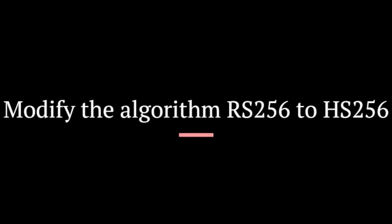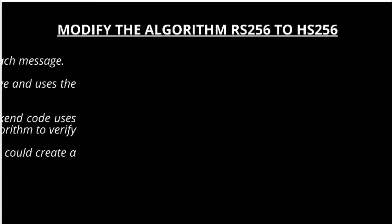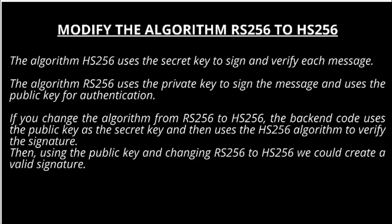Modify the algorithm from RS-256 to HS-256. The HS-256 algorithm uses the secret key to sign and verify each message, whereas RS-256 uses the private key to sign the message and the public key for authentication. If you change the algorithm from RS-256 to HS-256, the backend code uses the public key as the secret key and then uses HS-256 to verify the signature. Using the public key and changing RS-256 to HS-256, we could create a valid signature.